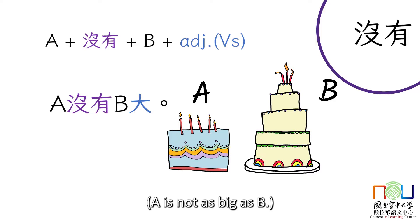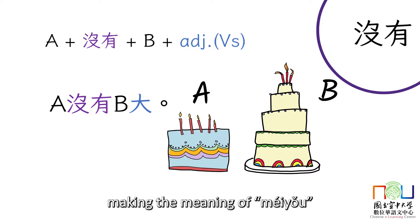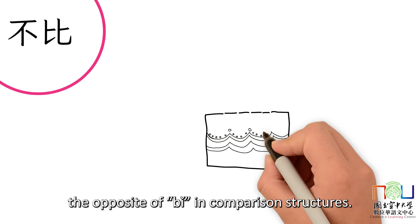A is not as big as B. In this structure, the noun that's placed first is less of a stative verb than the second noun in terms of degree, making the meaning of 没有 the opposite of 比 in comparison structures.